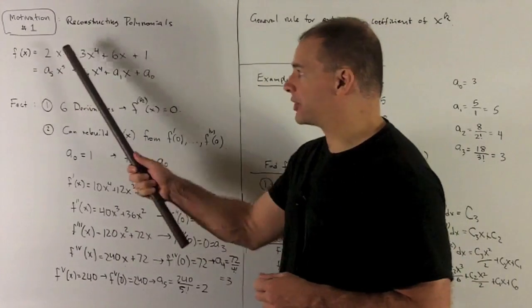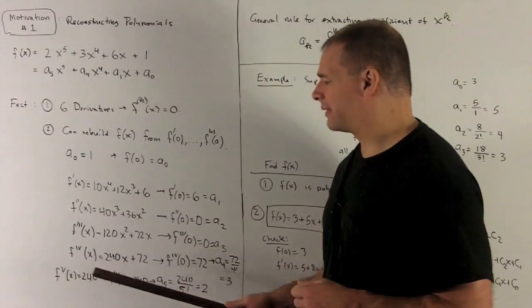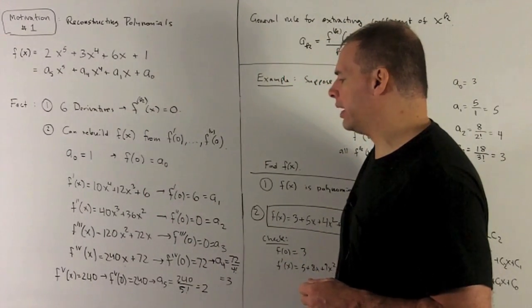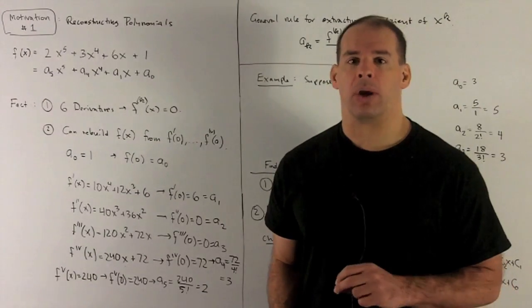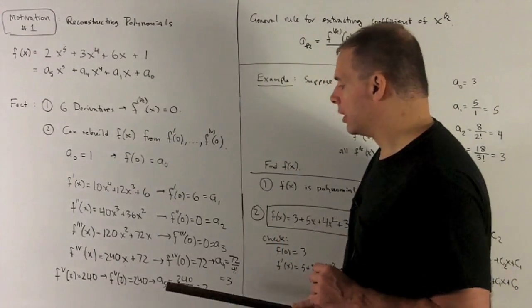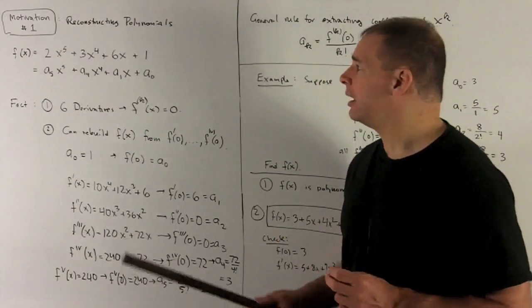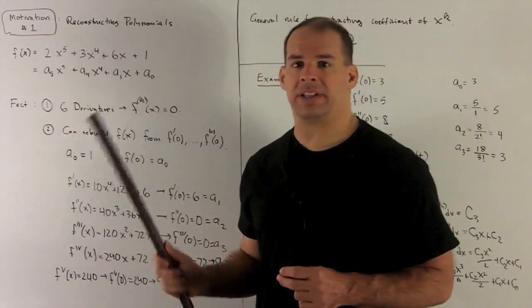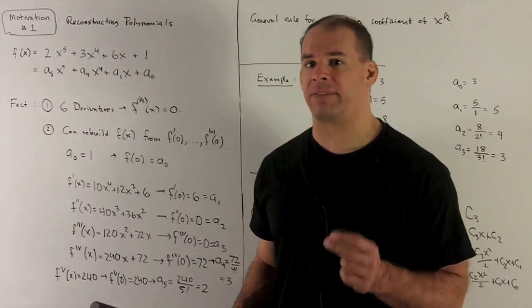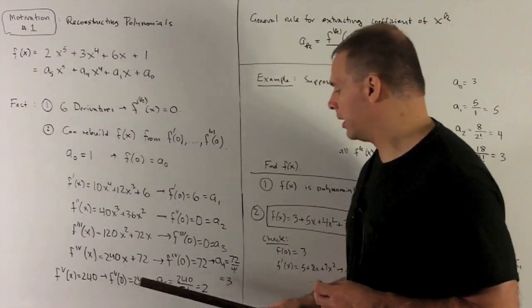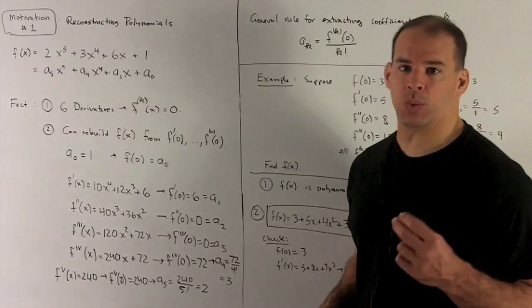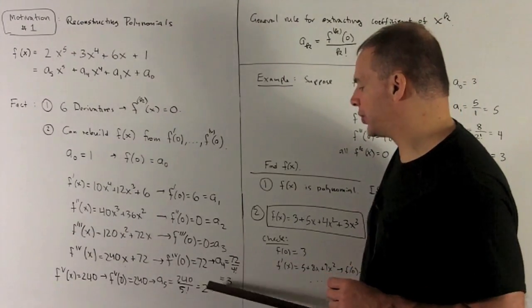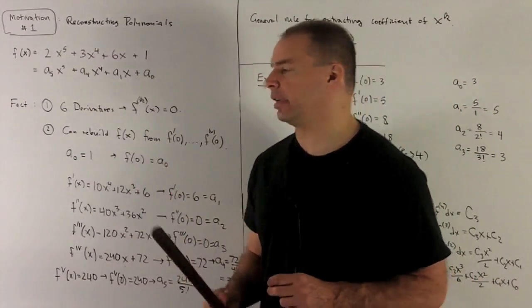For our last coefficient, take the fifth derivative. That gives me a 240. I put 0 in. No matter what I put in there, I get 240. So we're going to have the same idea. What's going to come down on this? 5 times 4 times 3 times 2 times 1. If I take 5 derivatives, I'm going to have to divide that 240 by 5 factorial, which is 120, and that's going to give me a 2, and that will agree with what we saw here.